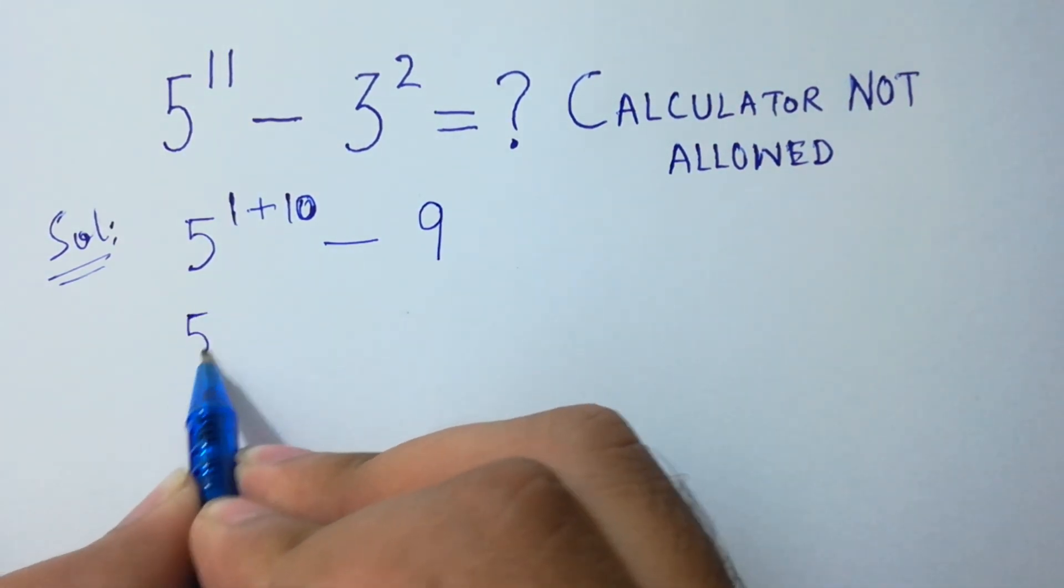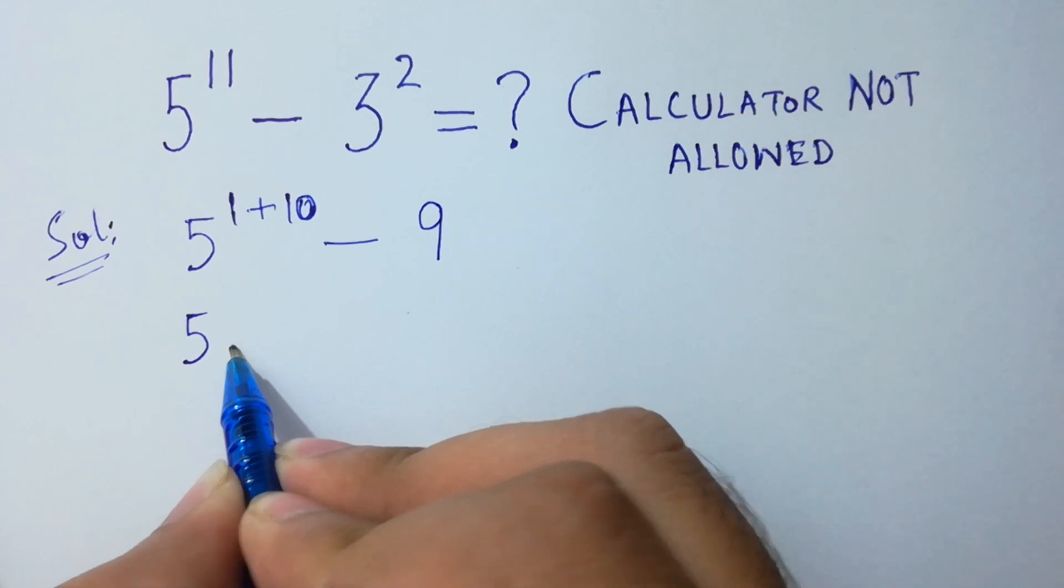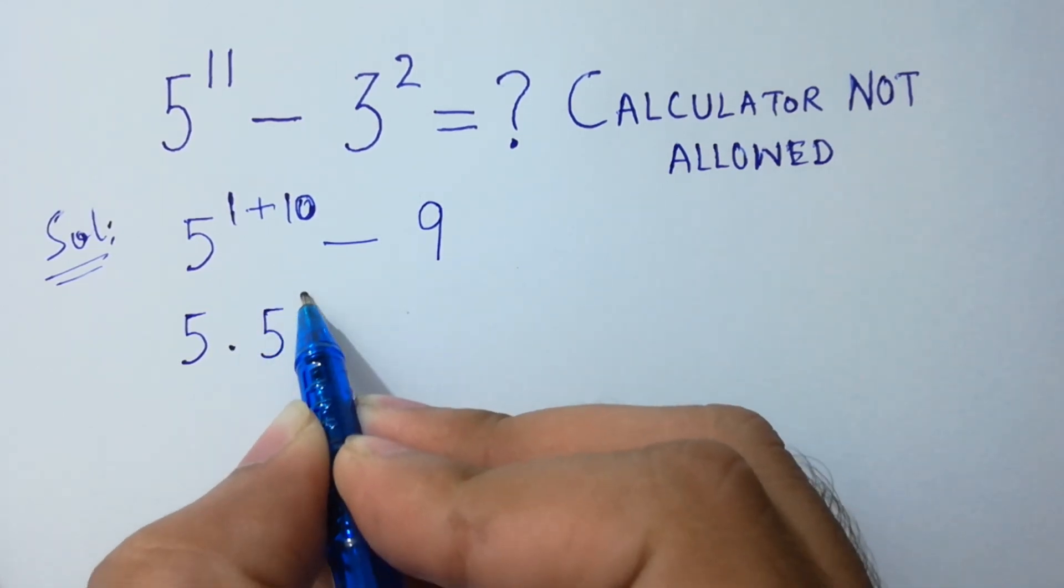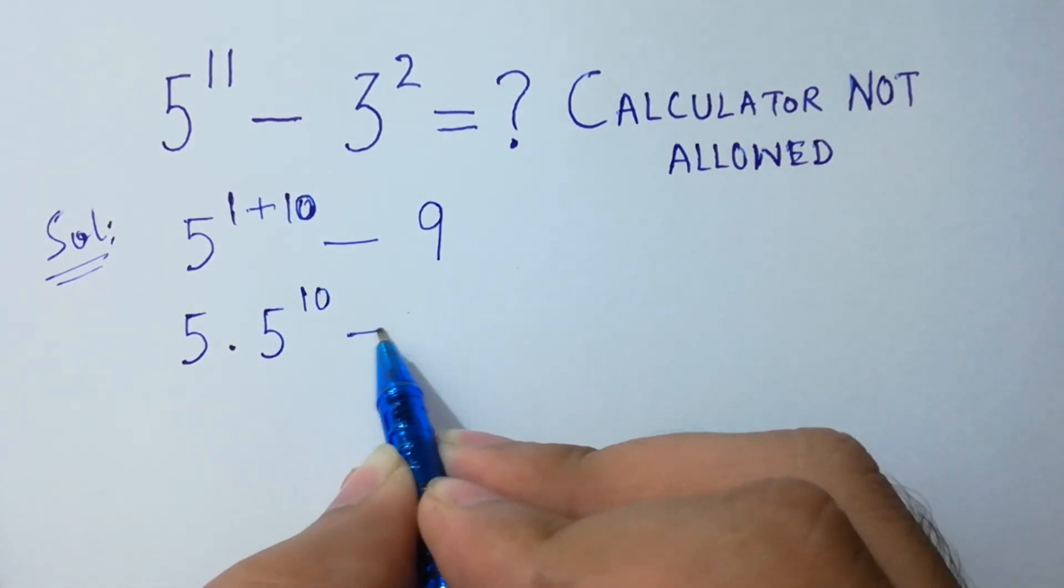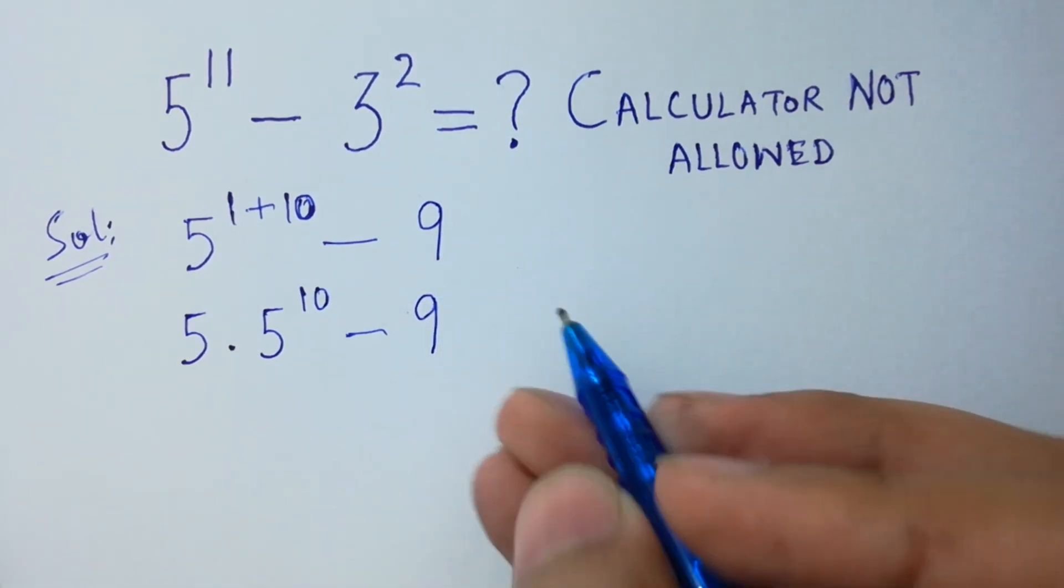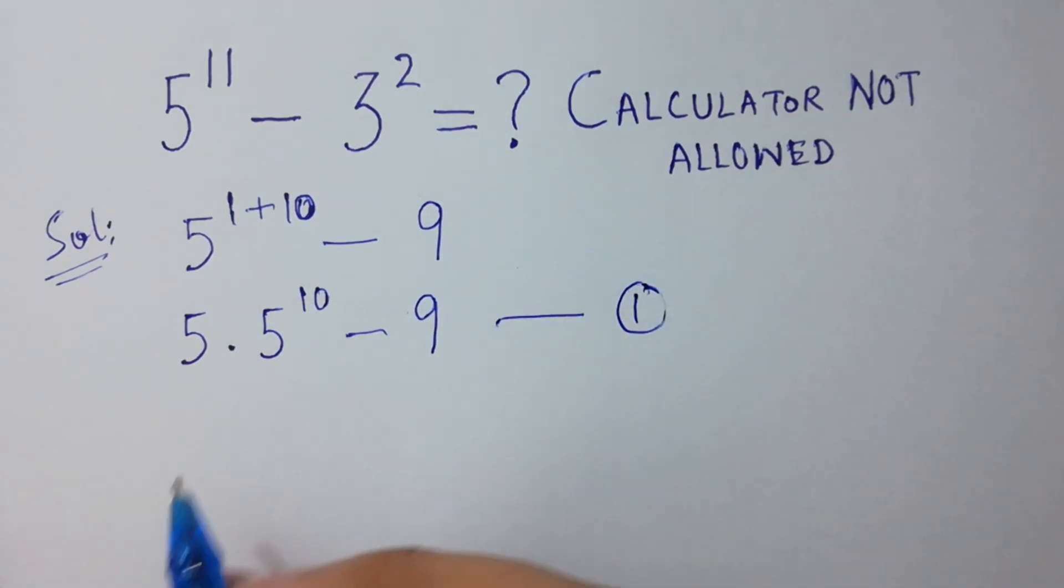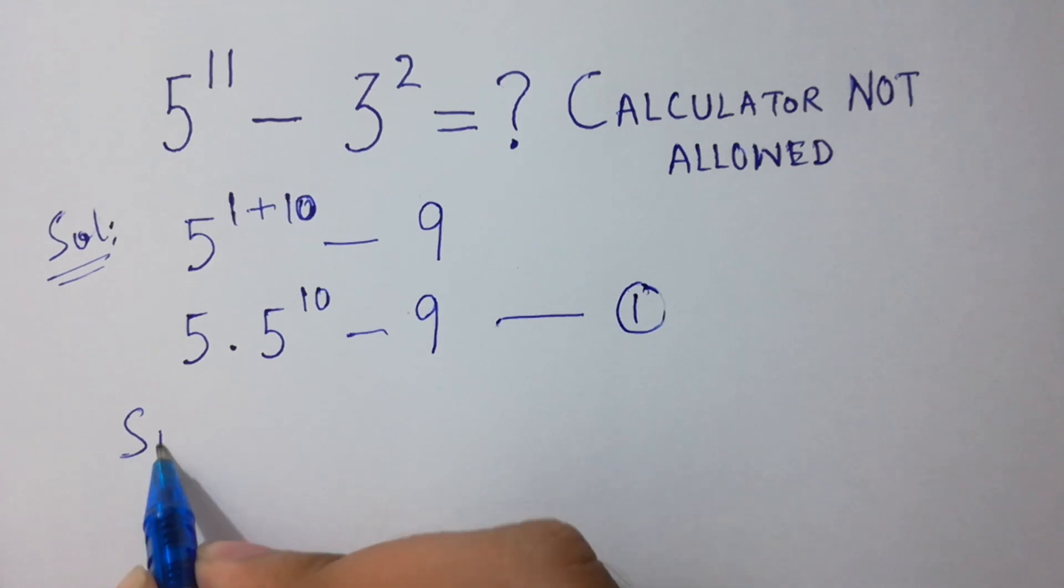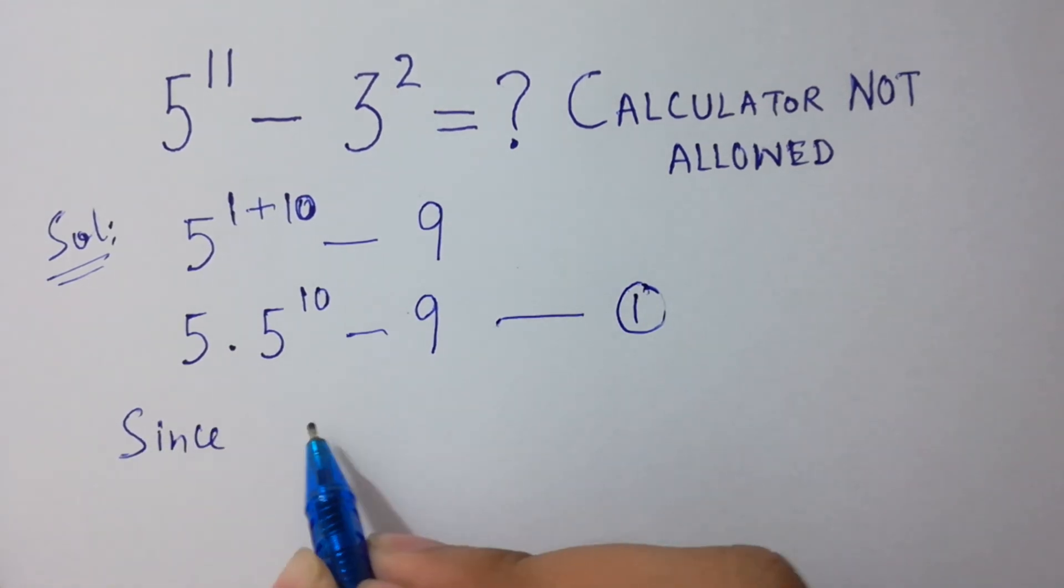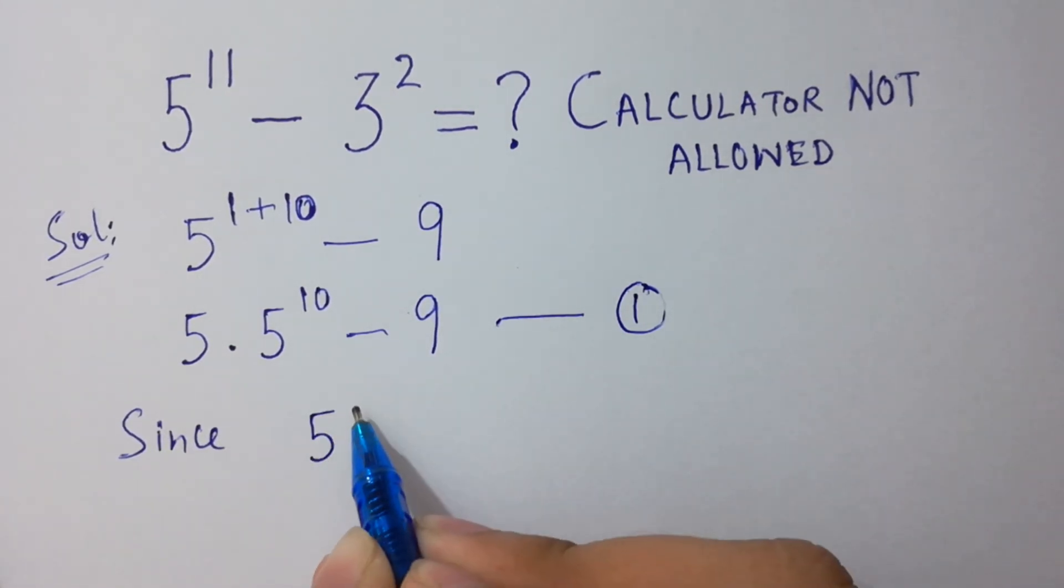So 5 times 5 to the power 10 minus 9. Let this be the first equation. Now, since 5 to the power 5...